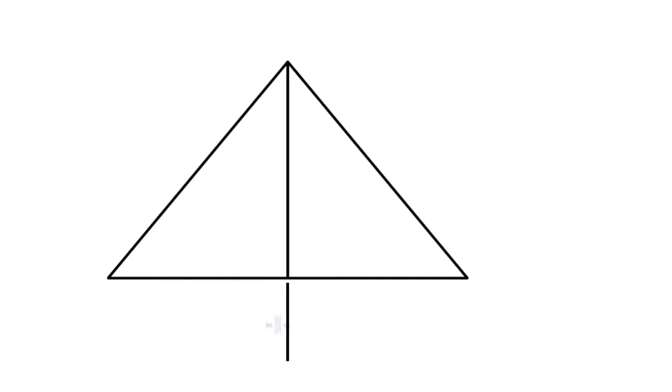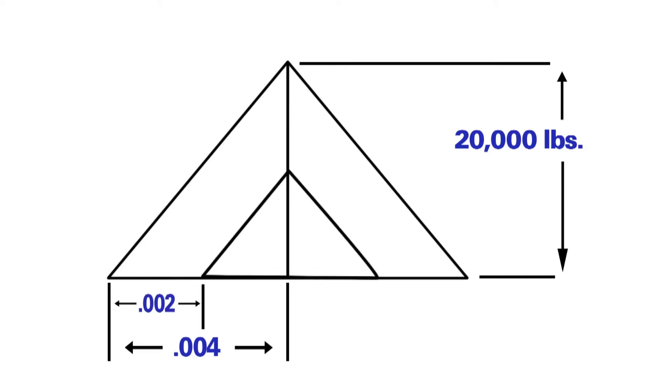In this example, let's say the bolt stretch is four thousandths and the load is twenty thousand pounds. Now let's say there is some sort of relaxation in the system. This might be due to yielding of the gasket over time or due to differential thermal expansion. If the amount of relaxation was two thousandths of an inch, then this would result in a fifty percent loss in preload. The remaining preload would be ten thousand pounds. The loss of preload is simply a ratio of the relaxation to the bolt stretch.